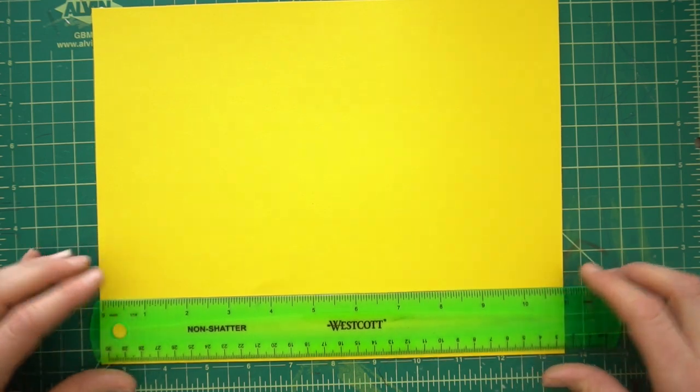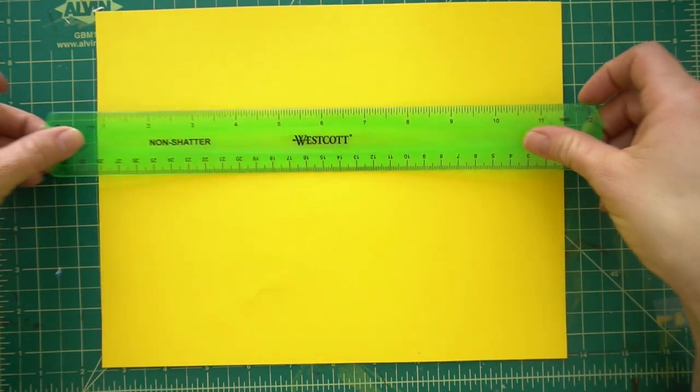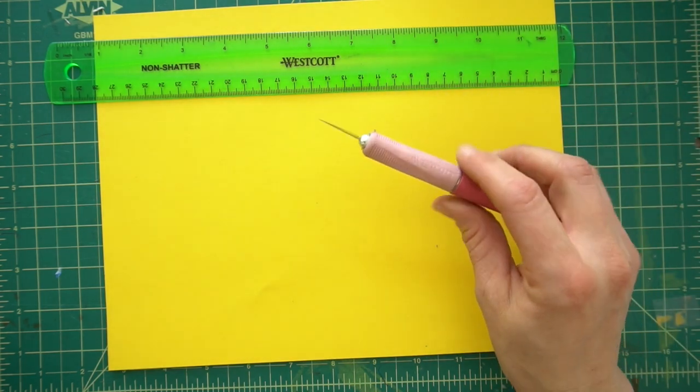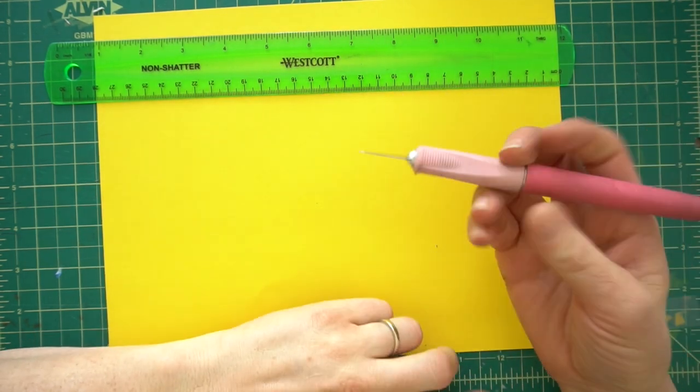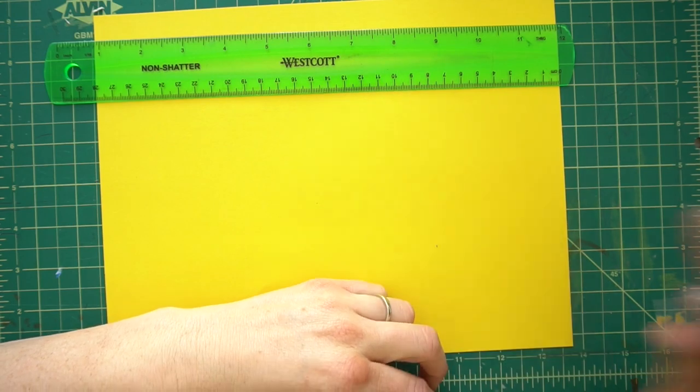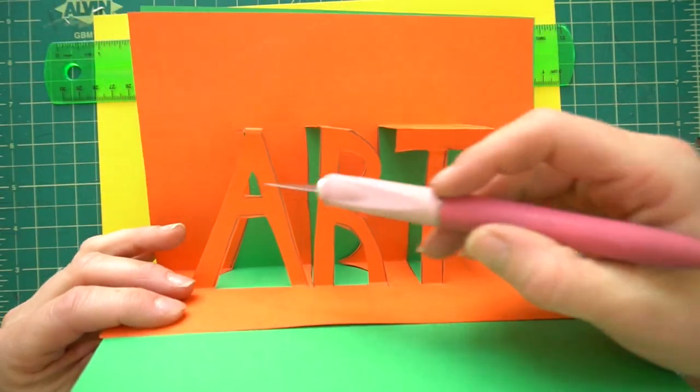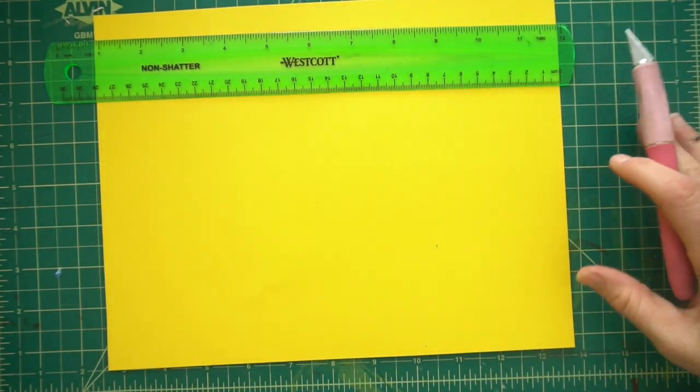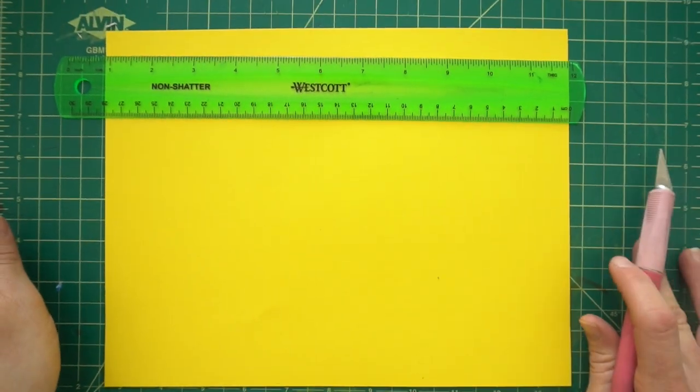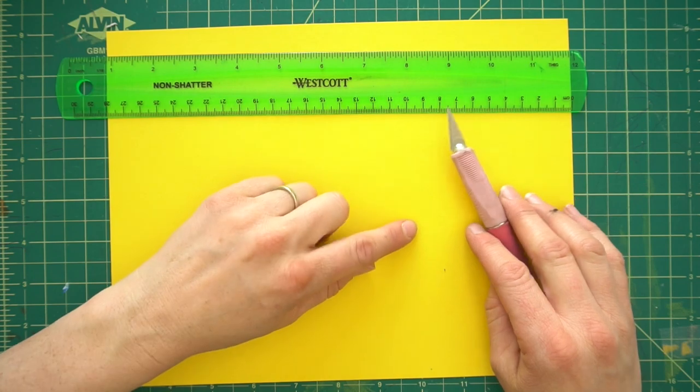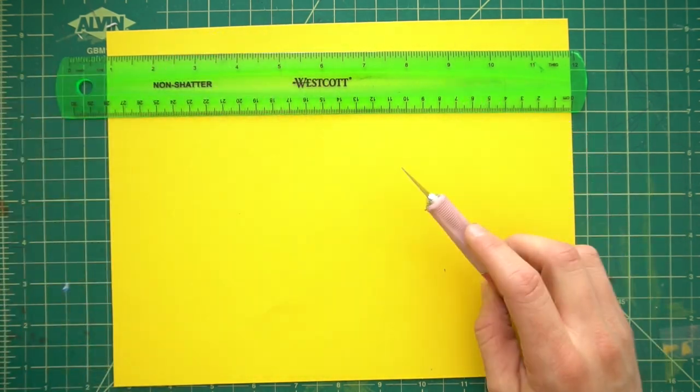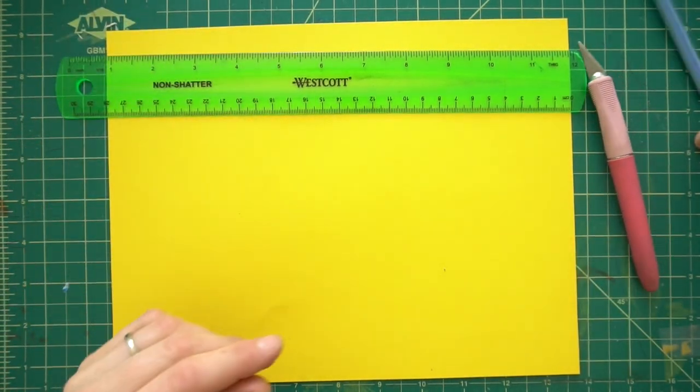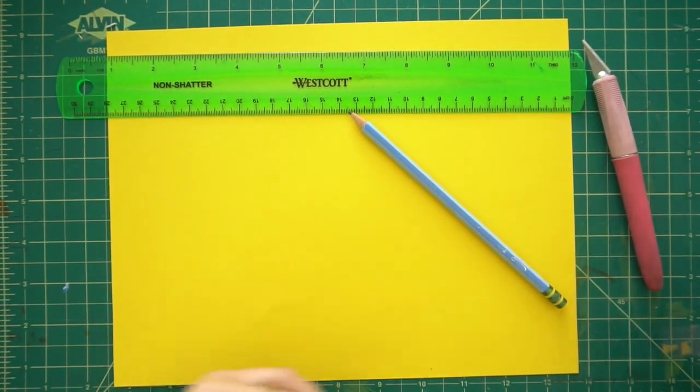And you need a ruler. This is really important because it's how we measure out the space. And then you need something to cut with. This is important, this is sharp. If you're going to be using one of these, which I definitely recommend, it's very helpful for cutting out shapes. Then make sure you use a cutting board or a piece of cardboard, something to protect the surface that you're working on.